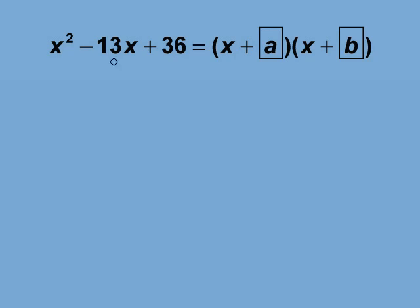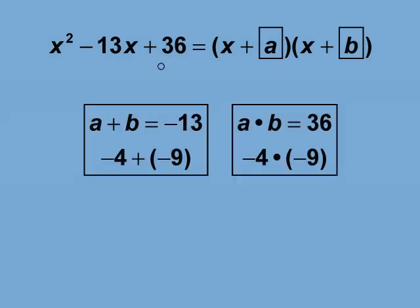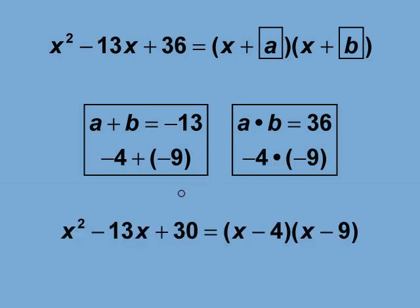Looking at the coefficient of the x term, we see that it's negative 13. And looking at the constant term, we find that it is 36. To find the values for a and b, find two numbers that add up to negative 13 and whose product is 36. The two numbers that do this are negative 4 and negative 9. So we can rewrite the factored form of the quadratic this way.